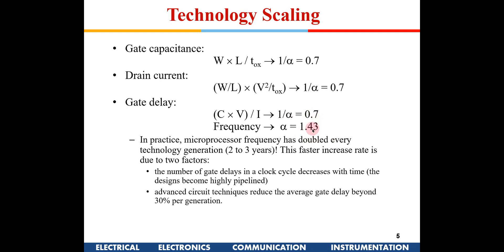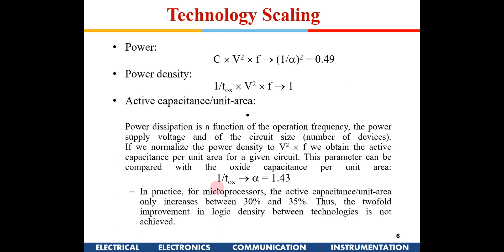Along with voltage scaling, there have been many architectural-level optimizations such as pipelining. So it is not that frequency increased only at the rate predicted by scaling — it actually increased at a much higher rate. We started with a few megahertz and have now reached gigahertz. Not only technology scaling, but architectural and algorithmic optimizations have also played a big part in increasing performance.